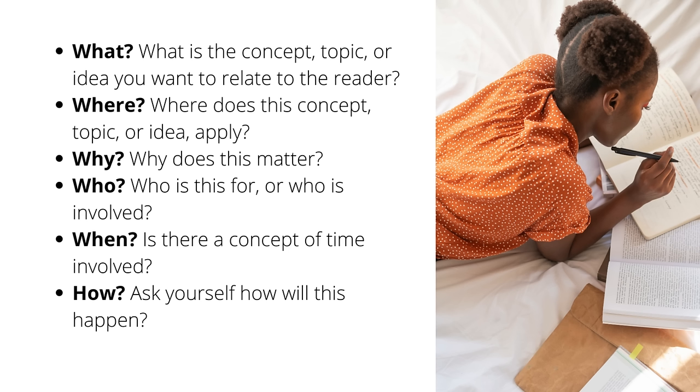When? Is there a concept of time involved? So if you're writing a, let's say, a memoir, and you're focusing on, let's say, three years of your life that were extremely difficult and taught you a lot of valuable life lessons, then you want to narrow down your scope there, and that's the way that you can divide up your book accordingly and figure out which parts are going to be the most important to focus on, which points are going to be the most important to focus on based on the timeline itself. And finally, how? Ask yourself, how will this happen?